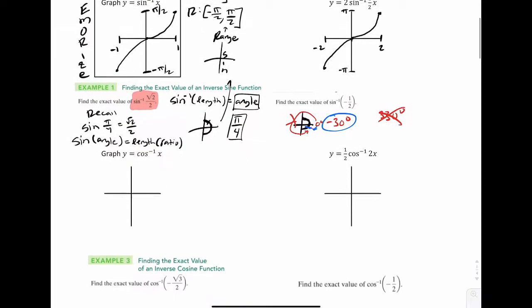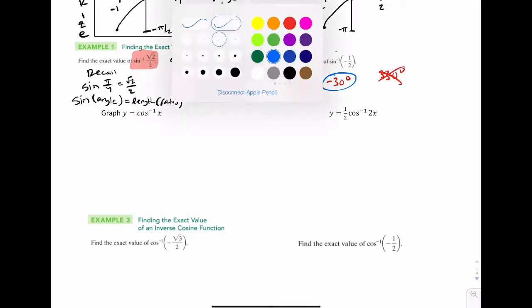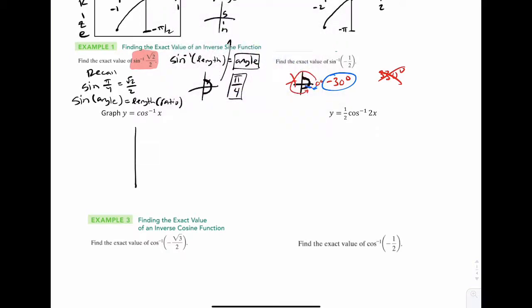Next one. For cosine, very similar here. Actually, I should fix this. We don't want an x like that. We want a t. So have a t like that. We're going to put -1 to 1. There's 0, π, π/2. So same thing. It's constructed by simply taking a piece of the cosine wave, and then you just flip over the y equals x line.